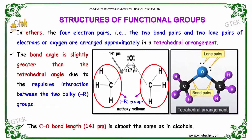Structures of functional groups. In ethers, the four electron pairs — that is the two bond pairs and two lone pairs of electrons on oxygen — are arranged approximately in a tetrahedral arrangement. The bond angle is slightly greater than the tetrahedral angle due to the repulsive interaction between the two bulky groups.